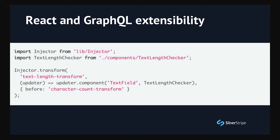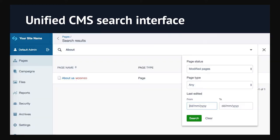The unified search interface: previously there were four, five, or six different search UIs. Now we have one. There's more flexibility and more control over search filters, as granular as you want. And best of all, this is powered with React.